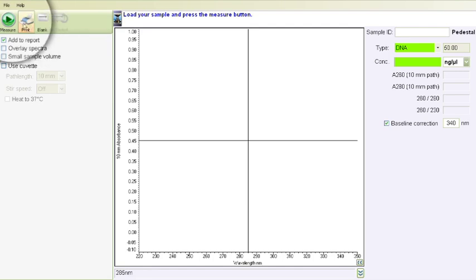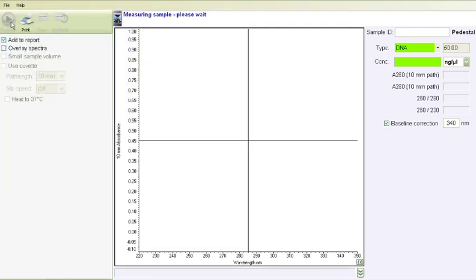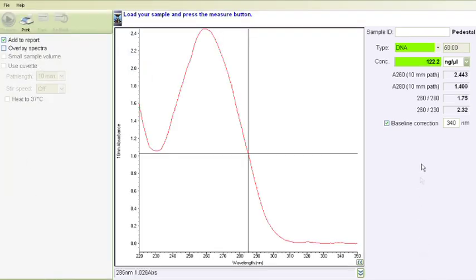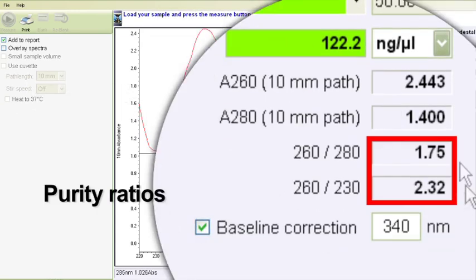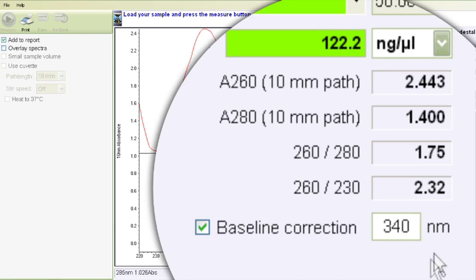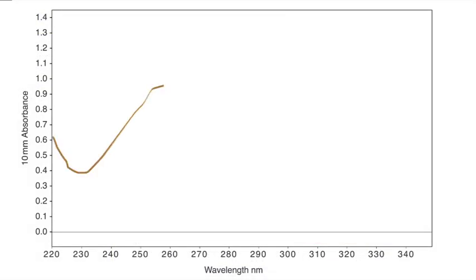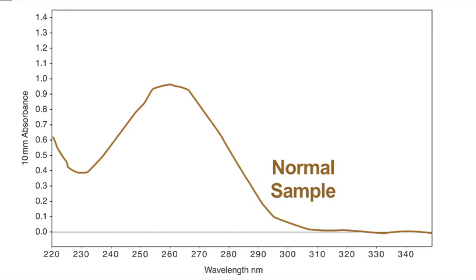Select Measure in the application software. The software will automatically calculate the nucleic acid concentration and purity ratios. Following sample measurement, review the spectral output. A typical nucleic acid sample will have a very characteristic profile.